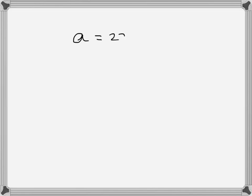The acceleration of a particle is given as 2x plus 5, and the particle's velocity is 3 centimeters per second when it is at the origin, so when x equals 0. We need to find an expression for the velocity in terms of displacement.